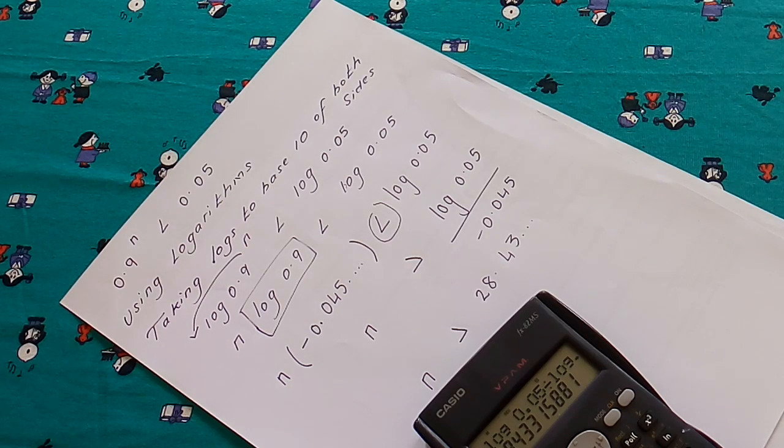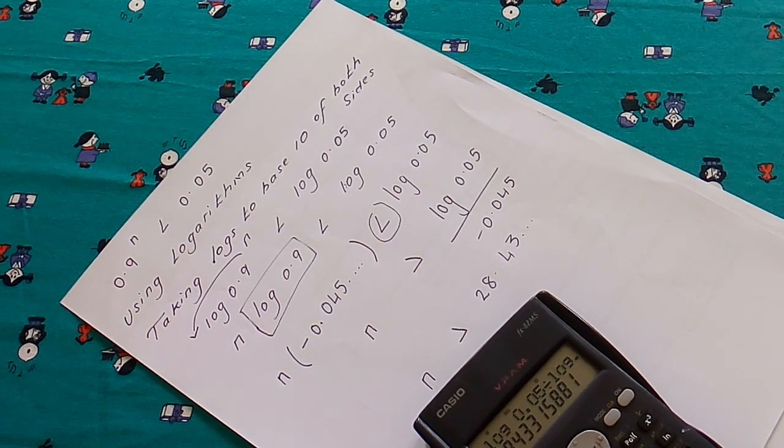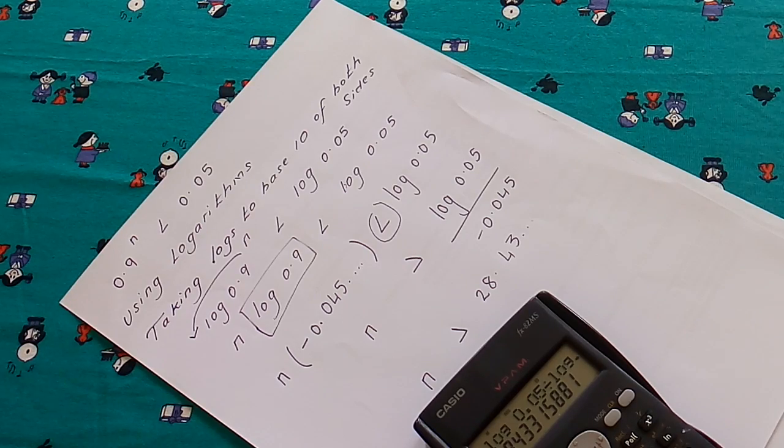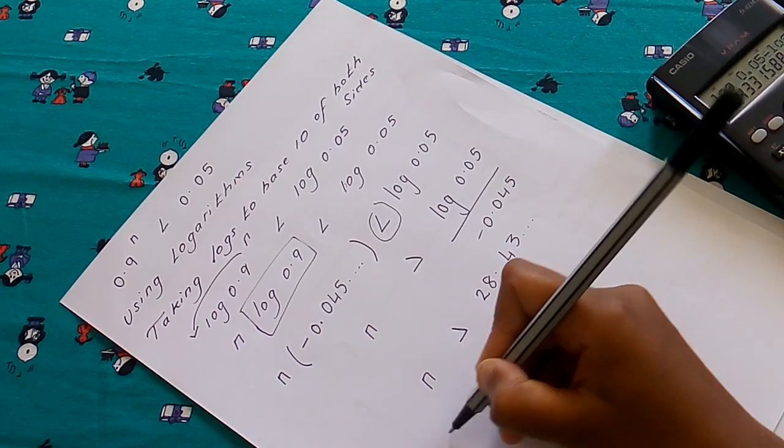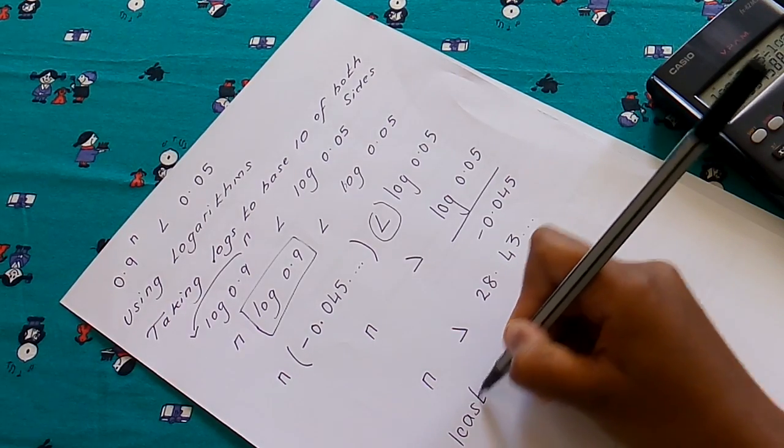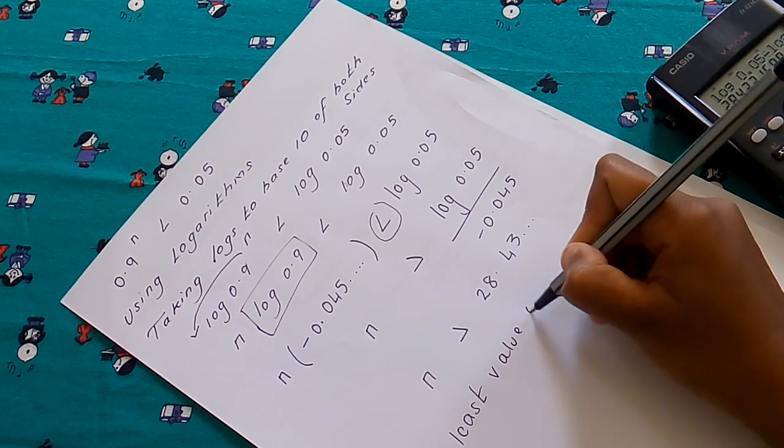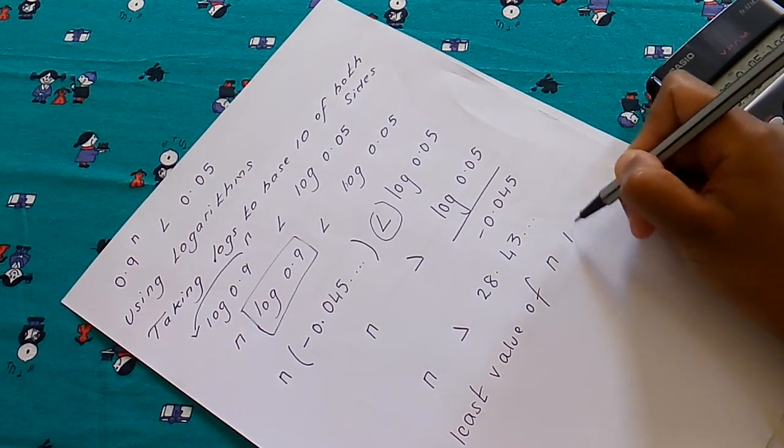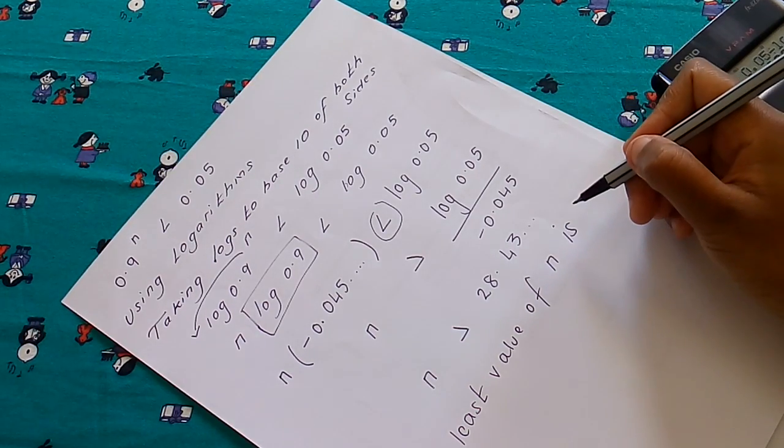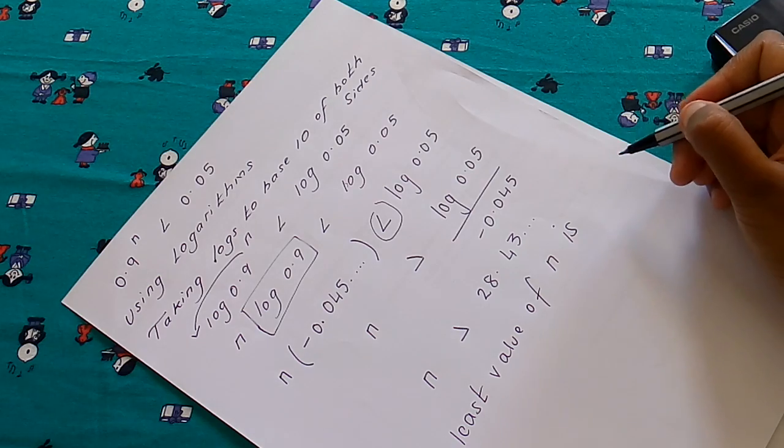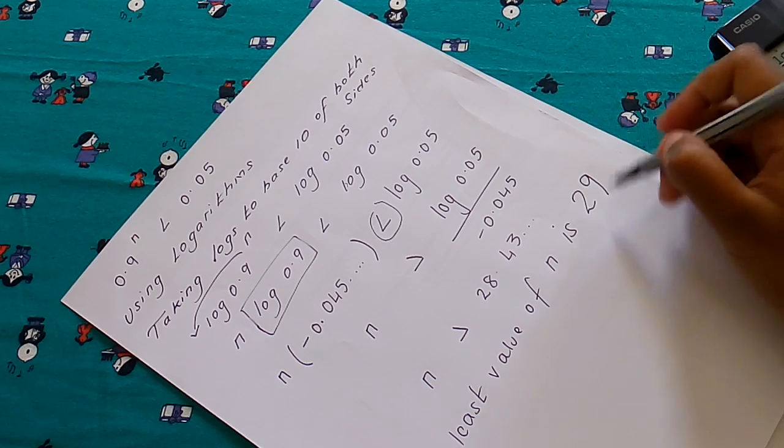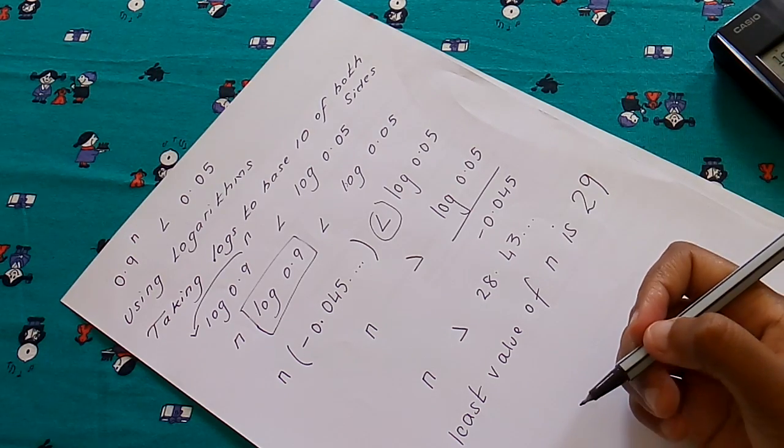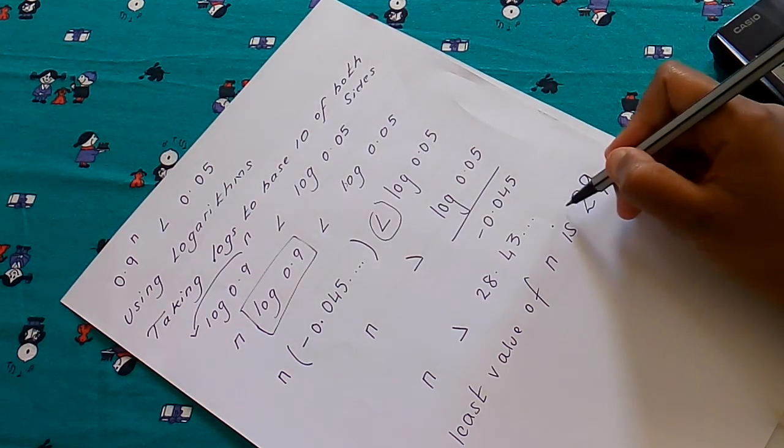Now the question says, how many pens would you need to select? So the least value of n is 29. So the number of pens is 29.